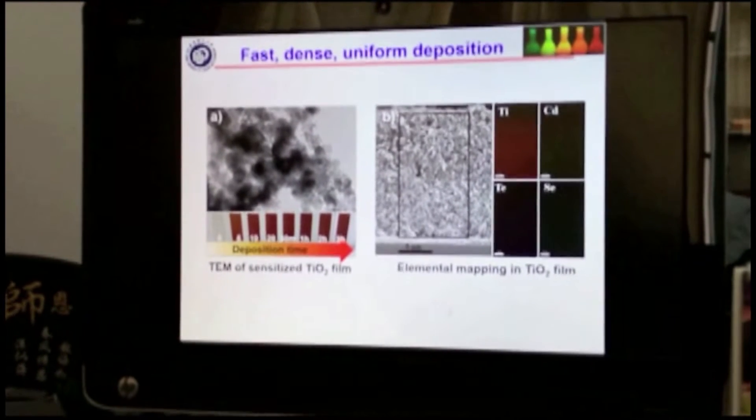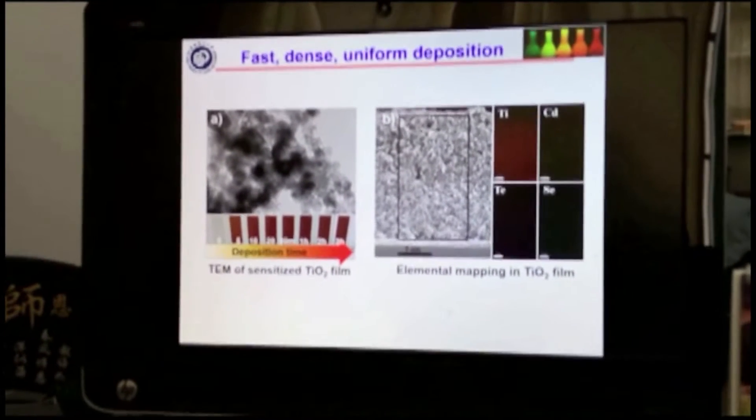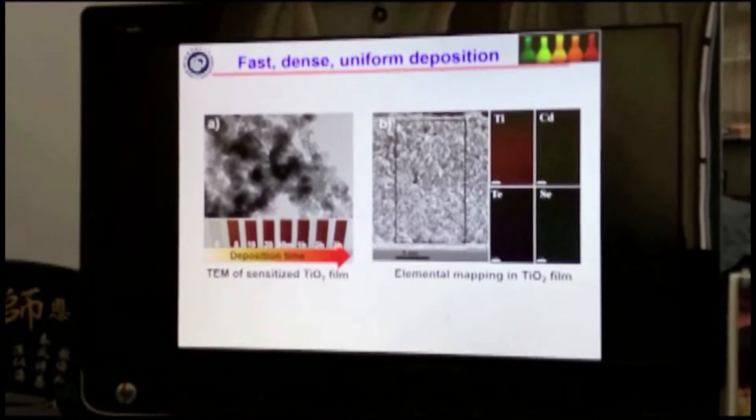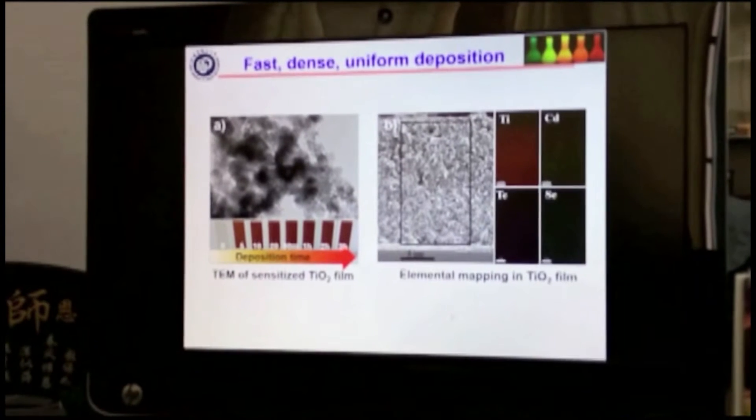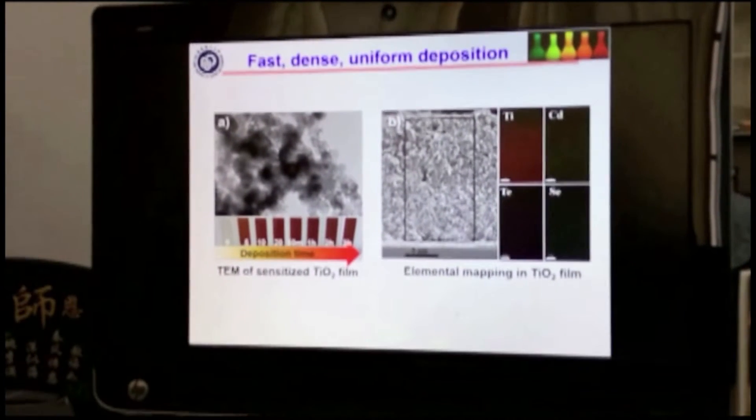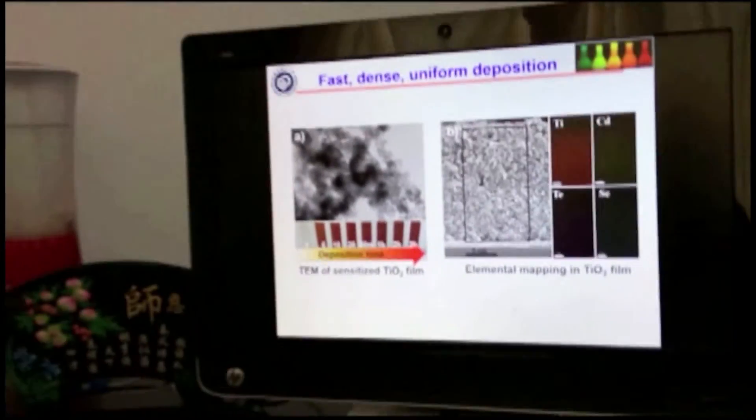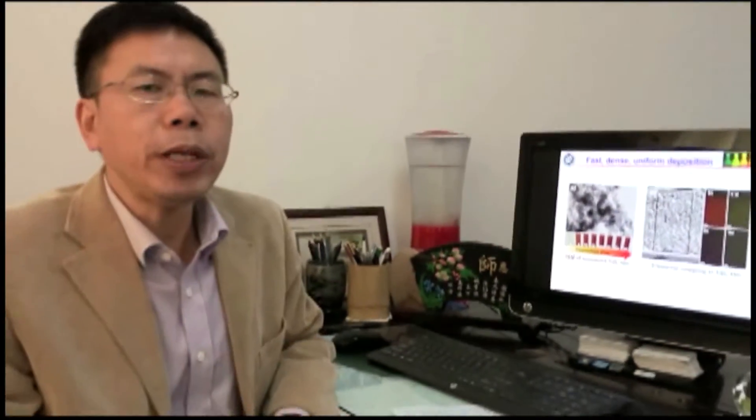With the combination of the effective deposition method and the adoption of quantum dots with the features of infrared absorption, high conduction band edge, and a retarded recombination rate, quantum dot solar cells with the certified efficiency of 9% is obtained in our lab. Following, my students are going to show the typical procedure for the construction of quantum dot solar cells.